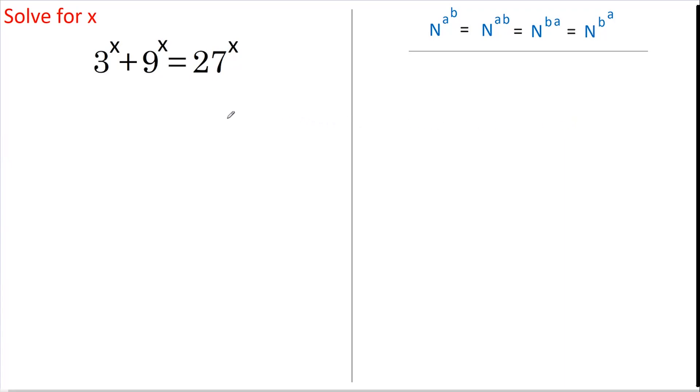Hi, welcome back. This is a problem that I found online and I thought I'd give it a go. 3 to the x plus 9 to the x equals 27 to the x. Now, 3, 9, and 27 are all on the 3 power table, so let's rewrite this as 3 to the x plus 3 squared to the x equals 3 cubed to the power of x.